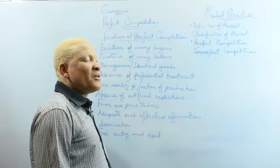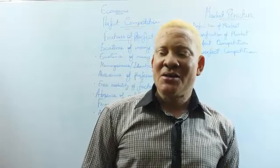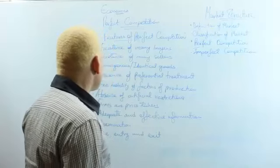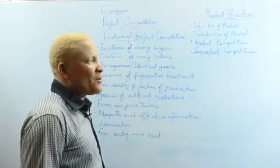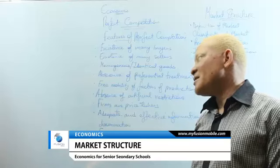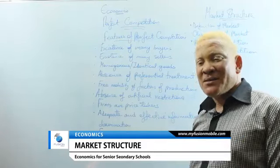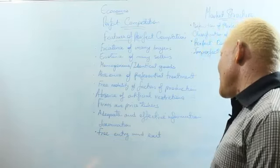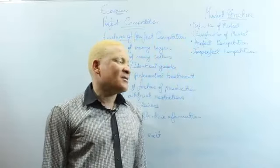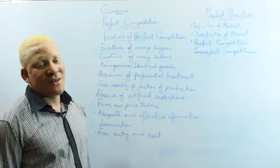Free mobility of factors of production means transportation and movement of labor is at no extra cost. The absence of artificial restrictions means no law forbids anyone from participating in the perfect market. Firms are price takers — the market price is not determined by the firms but only by the forces of demand and supply. Adequate and effective information dissemination makes every buyer or seller aware of market conditions so no one can go against them. And the last feature is free entry and exit — everyone has freedom to choose to be a member or to leave the industry.